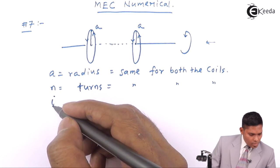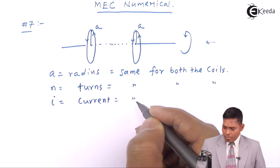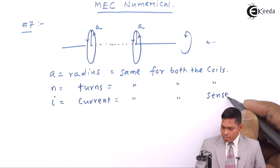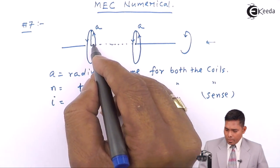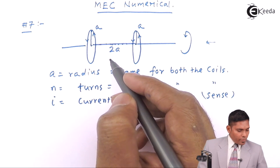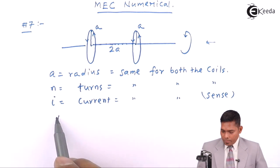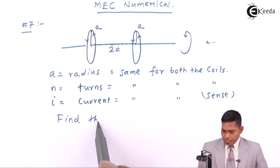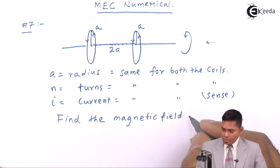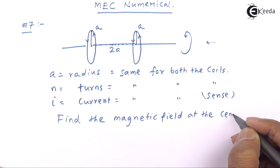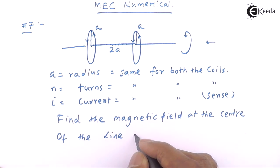The current is I — equal currents are flowing in both coils, in the same sense. The coils are separated by a distance of 2a, so this separation is 2a.